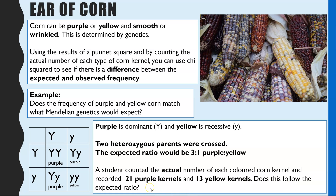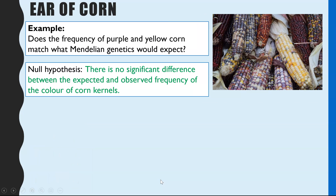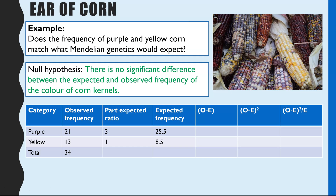We then need to use chi-squared to see whether this follows the expected ratio and therefore Mendelian genetics. The null hypothesis in this case is: there is no significant difference between the expected and the observed frequency of the colour of corn kernels. We're saying that the expected three-to-one ratio is going to be the same as what we observe.